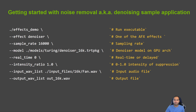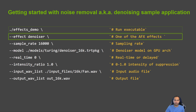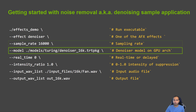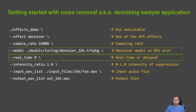Out of the box, Maxine's Audio Effects SDK comes with an effects_demo sample application. It can run any of the audio effects features on your input audio. You can pass the name of the effect — in this case the denoiser — the sampling rate of input audio, and the feature model provided with the SDK for your GPU platform.